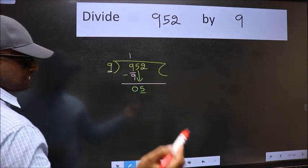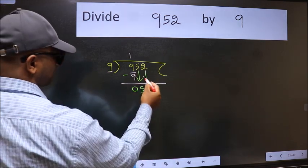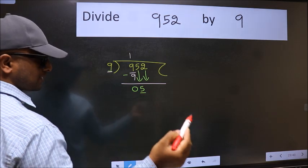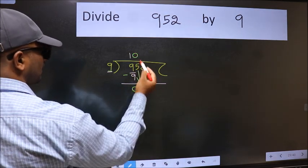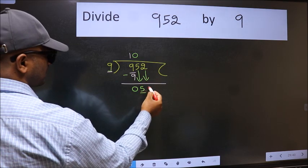So we should bring down the second number. And the rule to bring down the second number is we should put 0 here. Then only we can bring this number down.